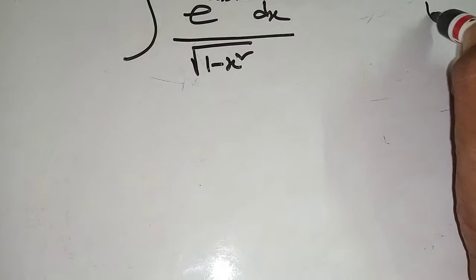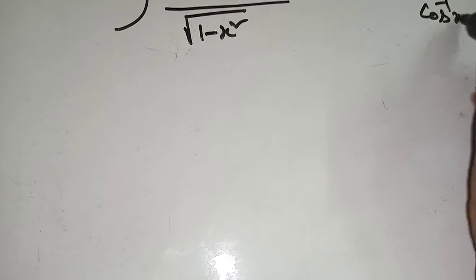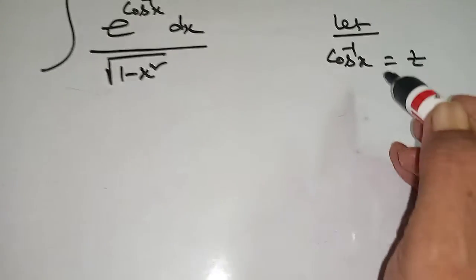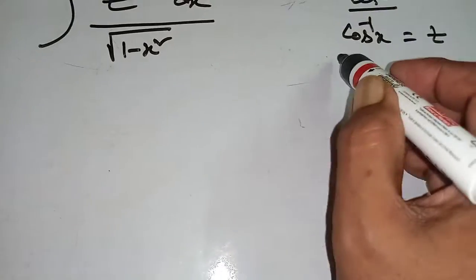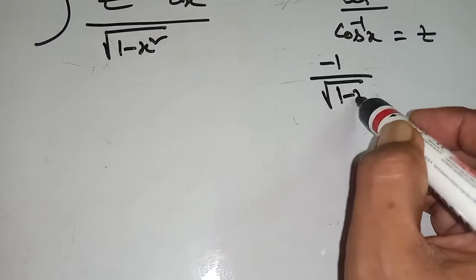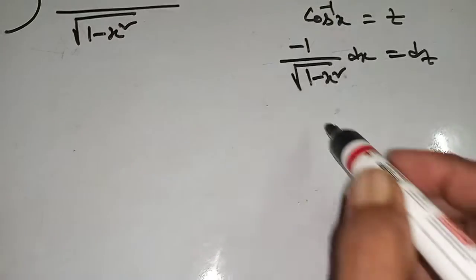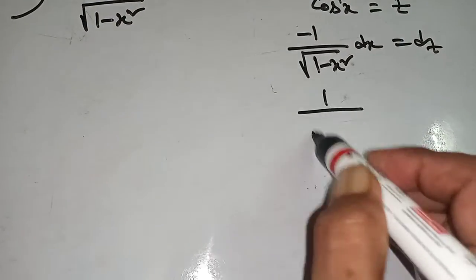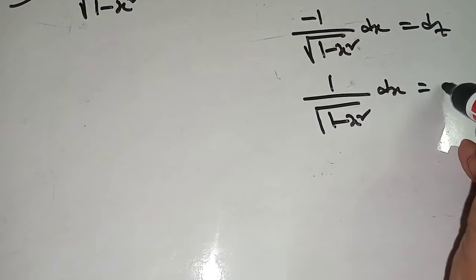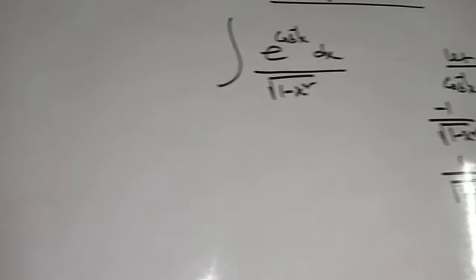At first, let cos inverse x equal to z. Differentiation with respect to x gives minus 1 by root over 1 minus x square dx equal to dz. Therefore, 1 by root over 1 minus x square dx equal to minus dz. Now put the value.